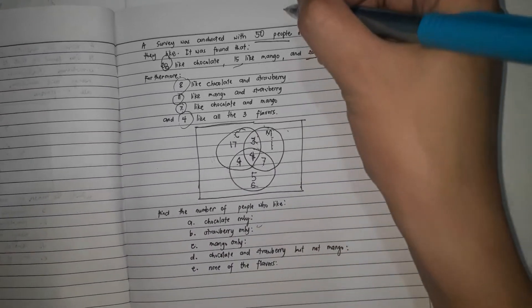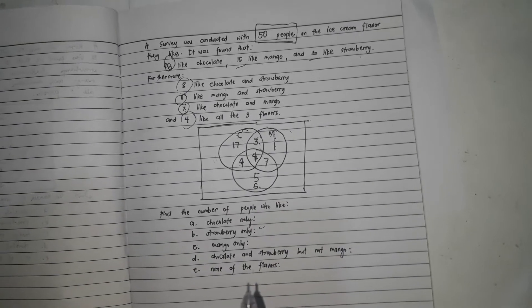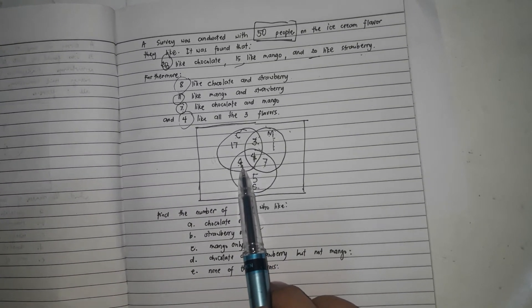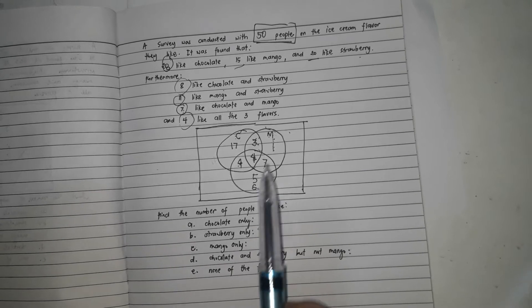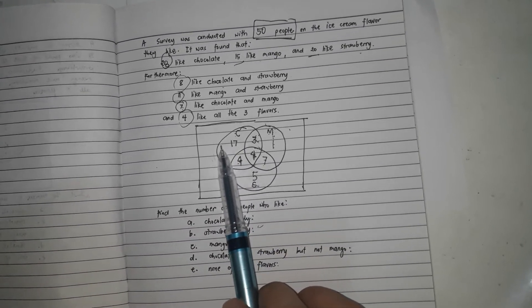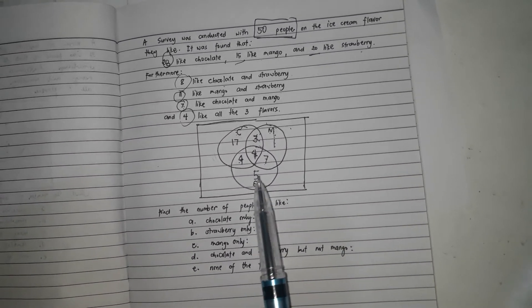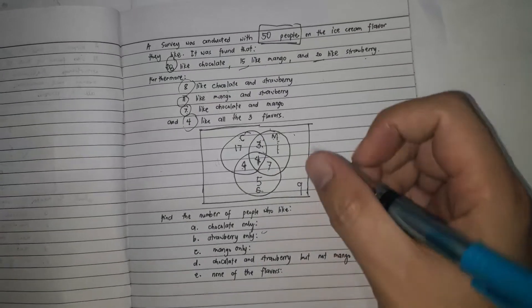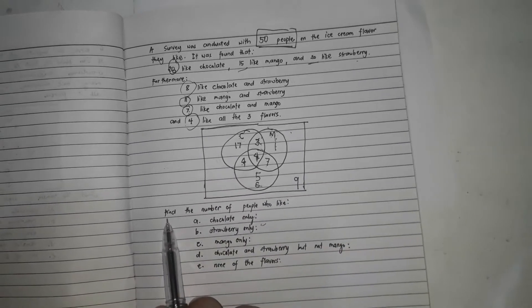There are 50 people total, so all numbers inside must sum to 50. Let's check: 17 plus 3 is 20, plus 1 is 21, plus 7 is 28, plus 4 is 32, plus 4 is 36, plus 5 is 41. So the total inside the circles is 41, meaning 9 people do not like chocolate, mango, or strawberry. Now we can answer the questions.